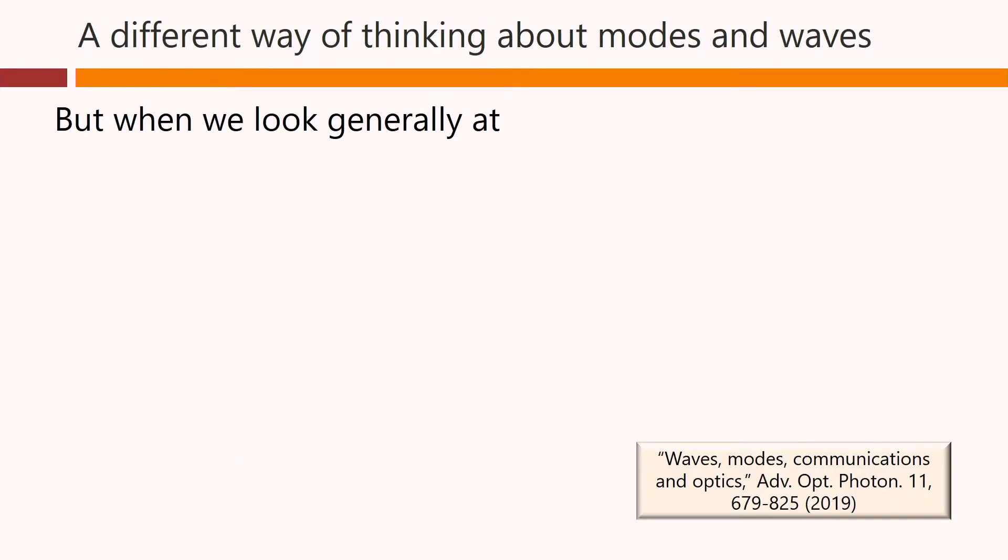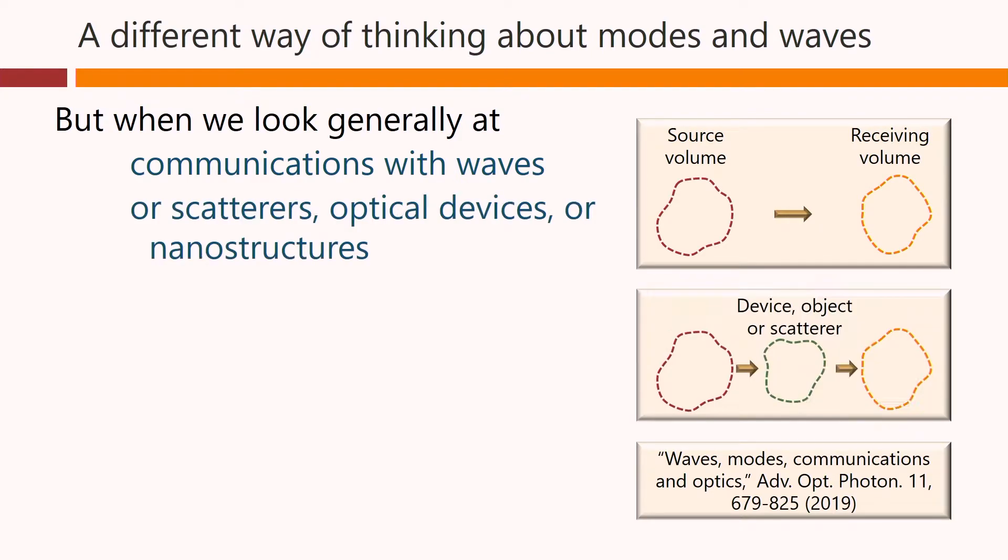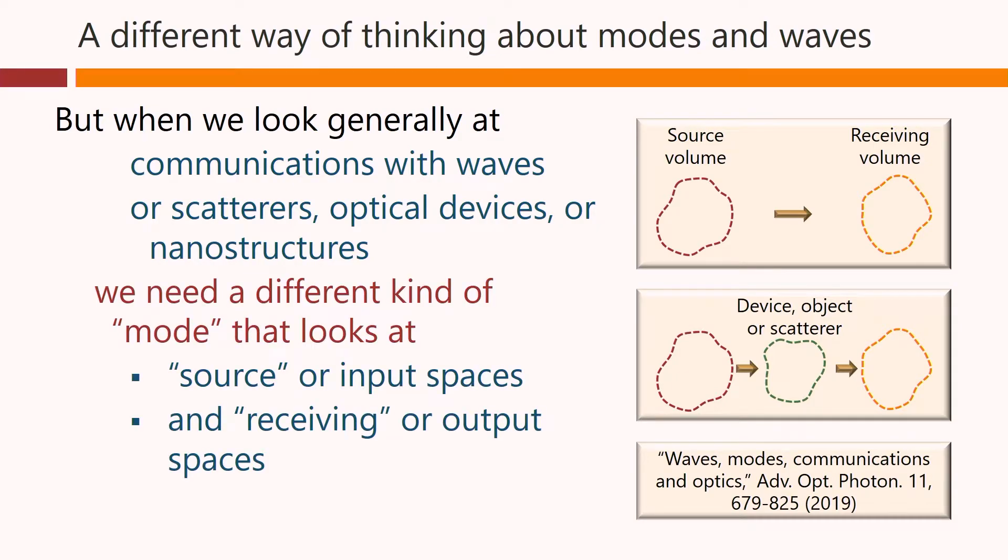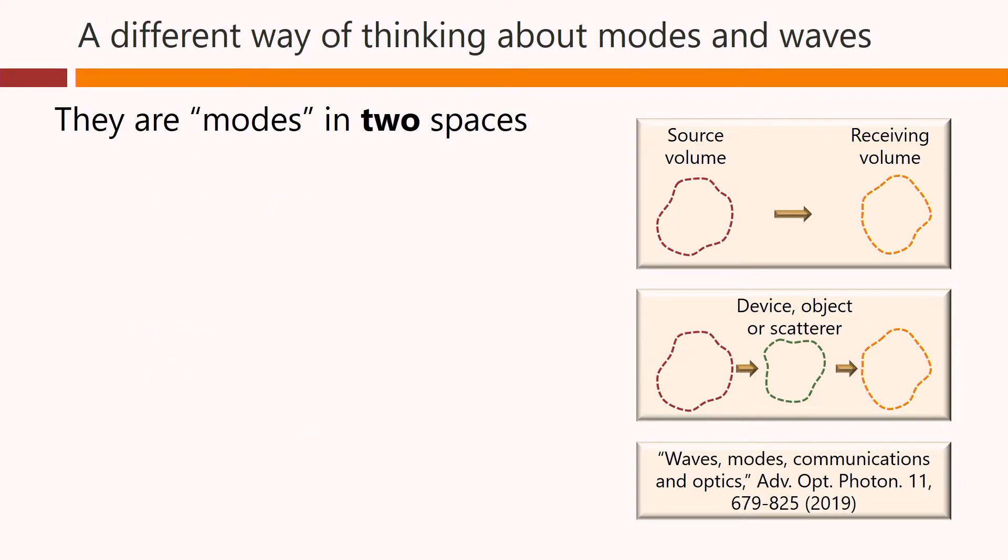But when we look generally at communicating with waves, or scatterers or optical devices or nanostructures between some source and receiving volume, we need a different kind of mode that looks at these source or input spaces and receiving or output spaces. They are modes in two spaces, not one space. They are not the beams between the spaces.